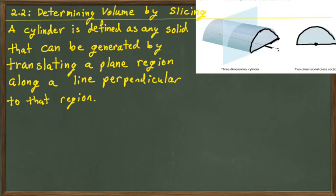In this video we're going to be looking at determining volumes by slicing. A cylinder is defined as a solid that can be generated by translating a plane region along a line perpendicular to that region. So if we have the x-axis right here, and then we just pull it out of the screen, we have a shape like this.